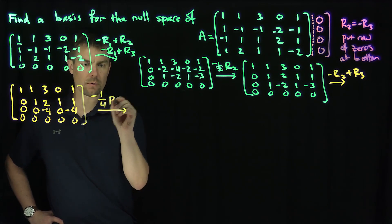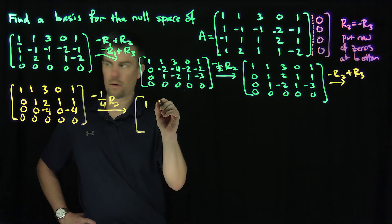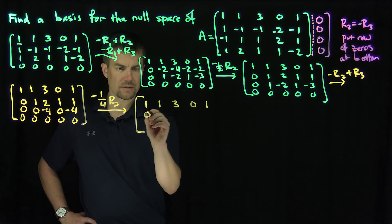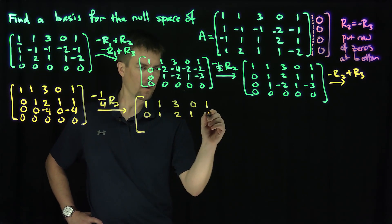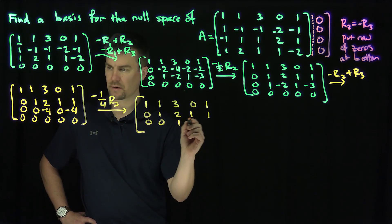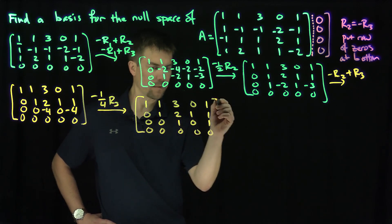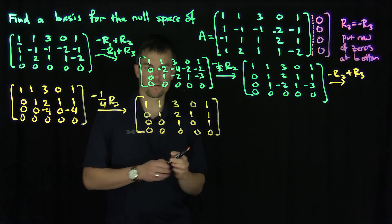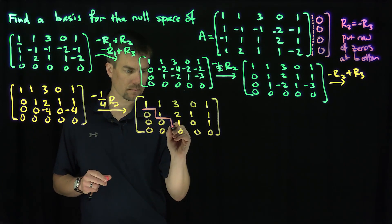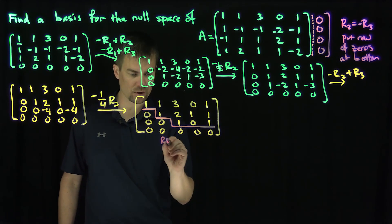Now I'm going to scale the third row by negative one-quarter, and that will give us what we want. So we'll have: 1, 1, 3, 0, 1; then 0, 1, 2, 1, 1; then 0, 0, 1, 0, 1; then zeros. And now we have this in row echelon form.